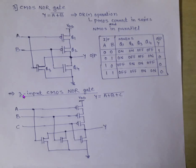For a 3-input CMOS NOR gate, three PMOS and three NMOS are required. Since this is an OR operation, the PMOS are connected in series and NMOS are connected in parallel. Inputs are A, B, and C. This circuit operates as a 3-input CMOS NOR gate. Thank you.